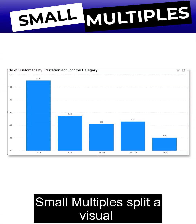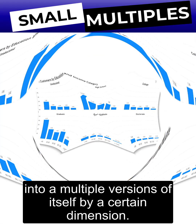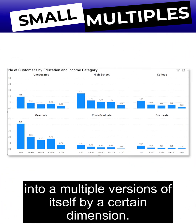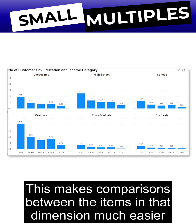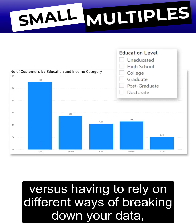Small multiples splits a visual into multiple versions of itself by a certain dimension. This makes comparisons between the items in that dimension much easier versus having to rely on different ways of breaking down your data.